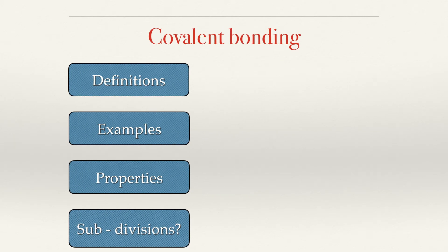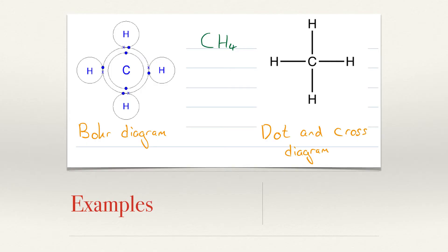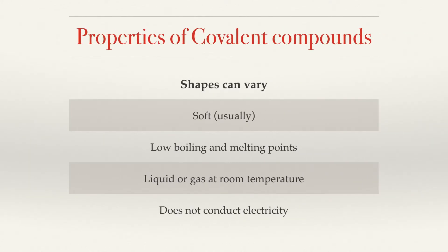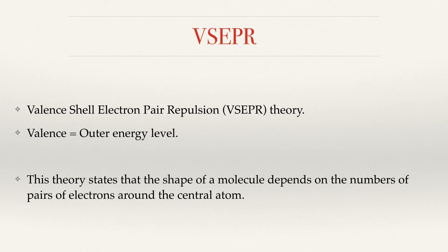You must apply the same headings to covalent compounds. A covalent bond is defined as the sharing of electrons between two or more elements. Similar to ionic bonding, you can represent this with a dot and cross diagram. Covalent properties are the exact opposite of ionic bonding properties. One of the most important properties is that shapes can vary for covalent molecules, whereas in ionic compounds atoms are locked into a crystal lattice. VSEPR stands for Valence Shell Electron Pair Repulsion Theory. Valency represents the number of electrons required to form a full outer orbit.